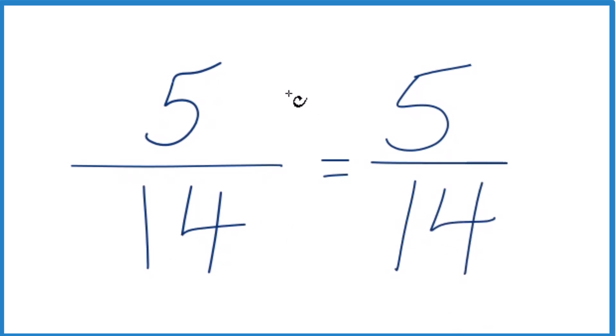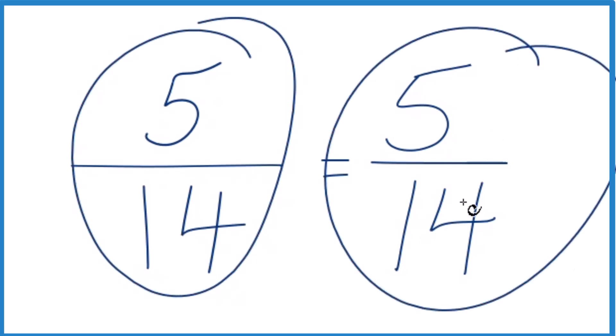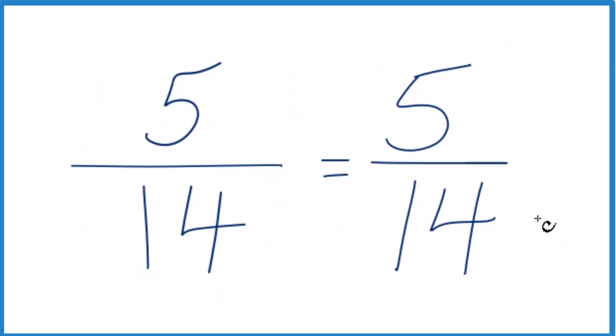What this means is that the fraction 5/14 is already simplified. We can't simplify or reduce 5/14 any further. So that's it. In answer to our question, when we simplify the fraction 5/14, we get 5/14. It's already simplified.